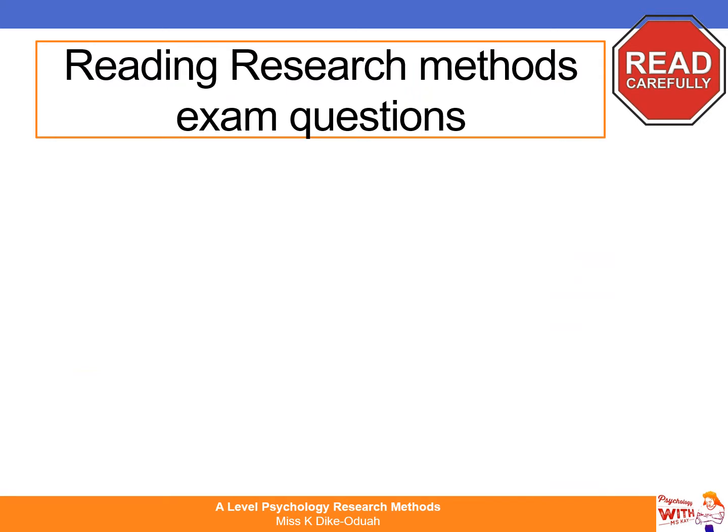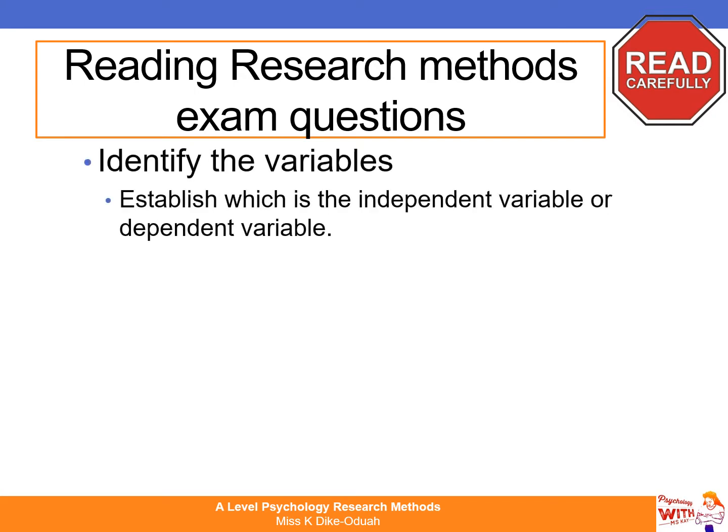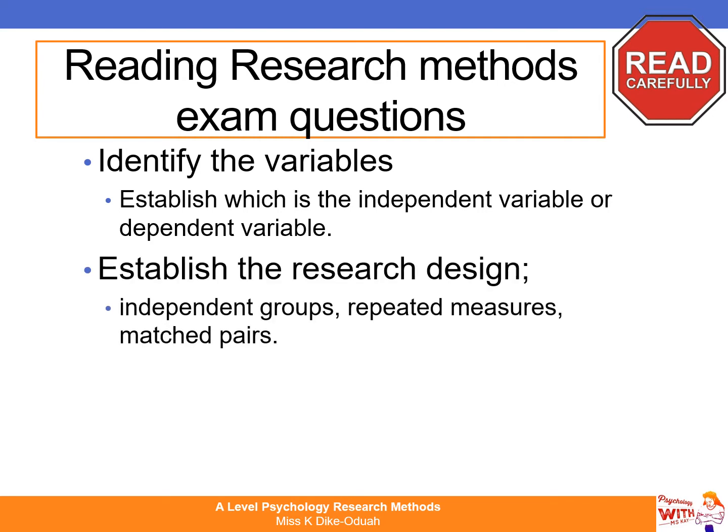Reading research methods exam questions is a top skill. You have to do it with excellence, with your full attention, and with your highlighter as well. There are a few things to consider whenever you come across a research methods exam question. The first thing is to identify the variables involved — identify which is the independent variable and which is the dependent variable. The independent variable is the one that the researcher has manipulated, and the dependent variable is what they are measuring. Then establish the research design: is it independent groups, repeated measures, matched pairs, or even a correlation?